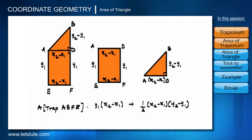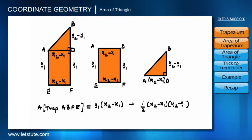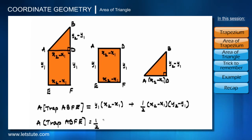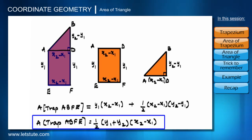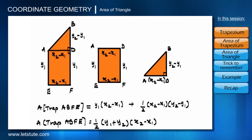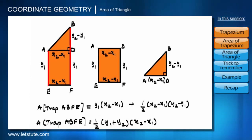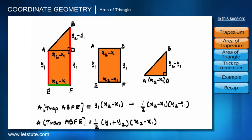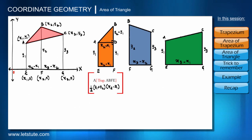Adding the rectangle and triangle areas and rearranging, we get the area of trapezium ABFE as half times (y1 plus y2) times (x2 minus x1). This is nothing but half times the sum of the lengths of the parallel sides — that is AE and BF — multiplied by the distance between the parallel sides. Using the same logic, we can find the areas of the remaining two trapeziums.